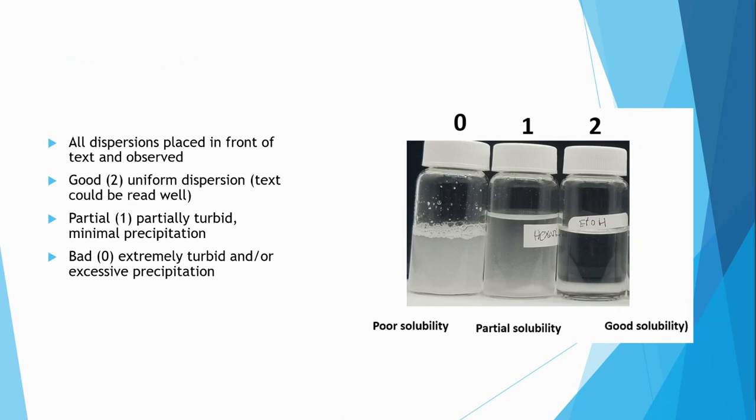Once the sedimentation time for each solvent has passed, all dispersions were placed in front of text and observed. A ranking of two corresponding to a good solvent was given to dispersions in which the text could be read well. A ranking of one for partial solvents was given to dispersions that were partially turbid and had minimal precipitation. A ranking of zero for bad solvents exhibited extremely turbid and/or excessive precipitation.